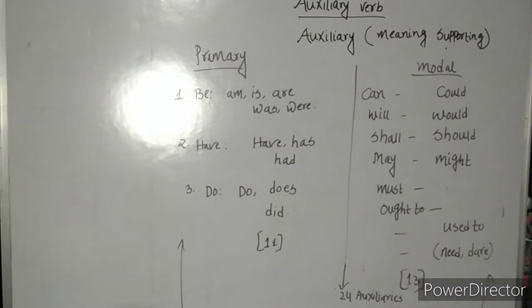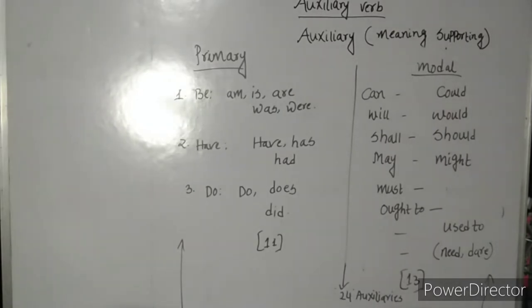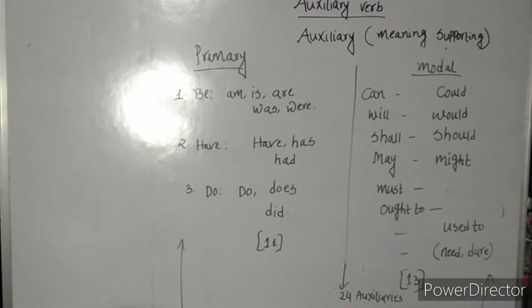There are overall 11 primary auxiliaries. There are total 13 modal auxiliaries. They are: can, could, will, would, shall, should, may, might, must, ought to, used to, need, dare. So overall there are 24 auxiliary verbs.